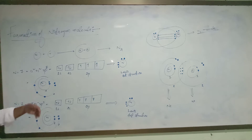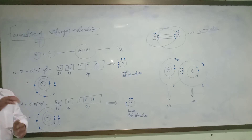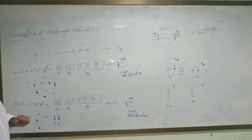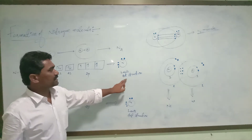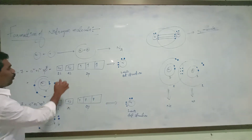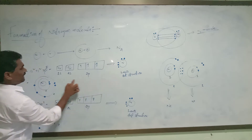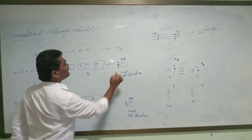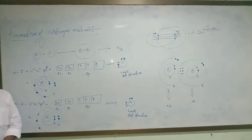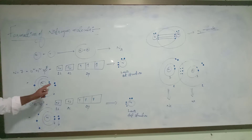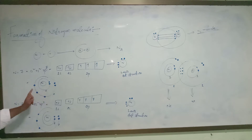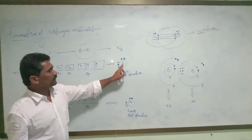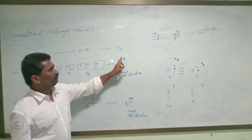According to the Lewis dot structure, I am going to write only the valence electrons on the symbol of nitrogen. This is the symbol of the nitrogen atom. I am indicating only the valence electrons in the last orbit of the nitrogen atom. In the second orbit, five valence electrons are here, so I am indicating five valence electrons on the nitrogen atom.